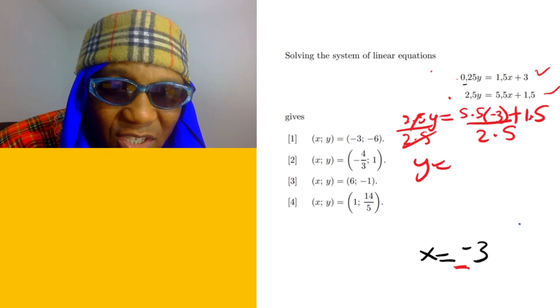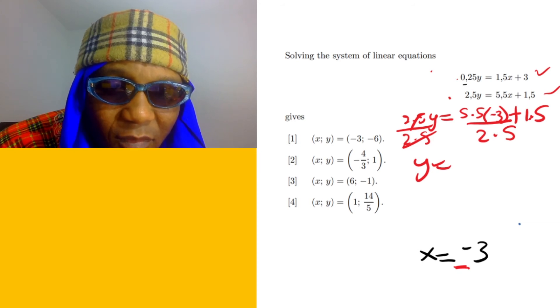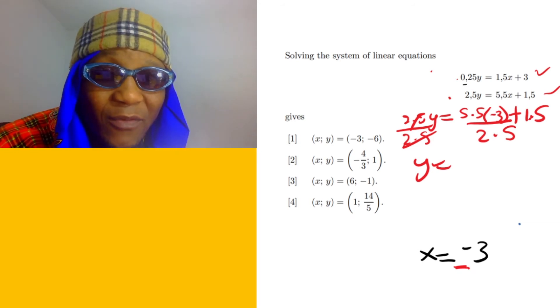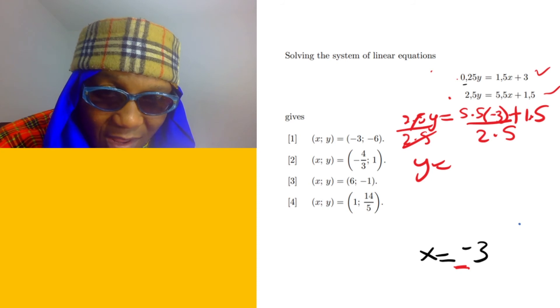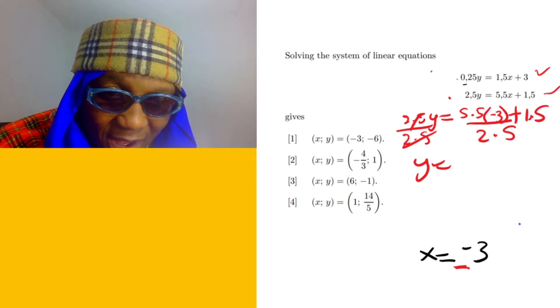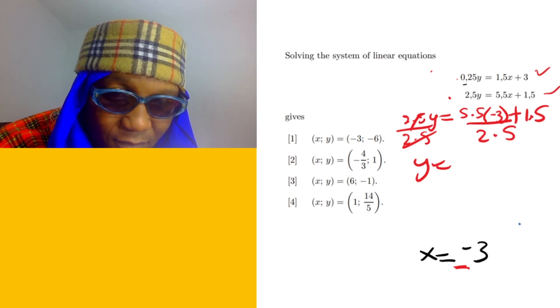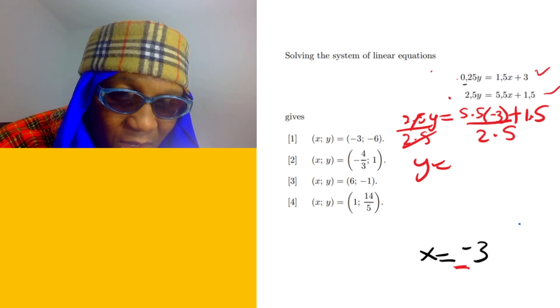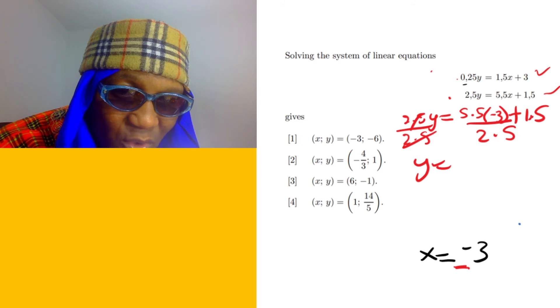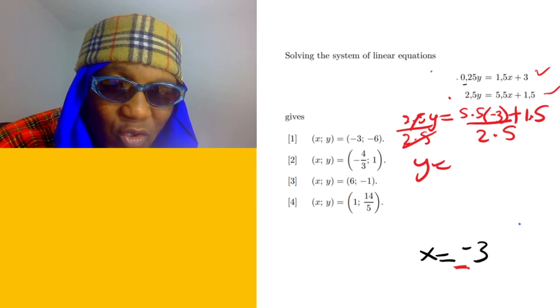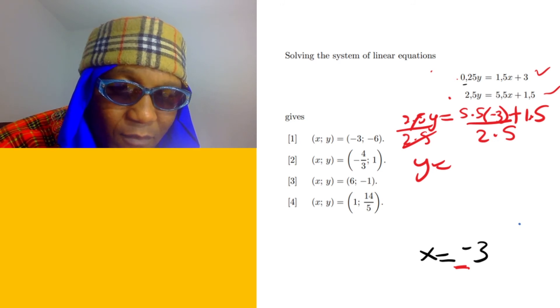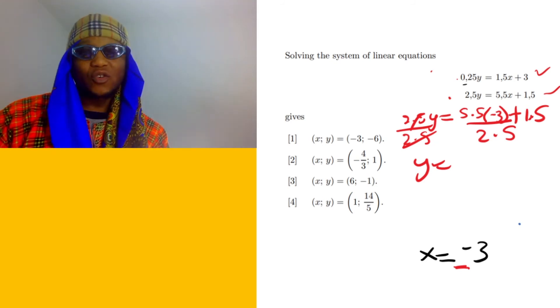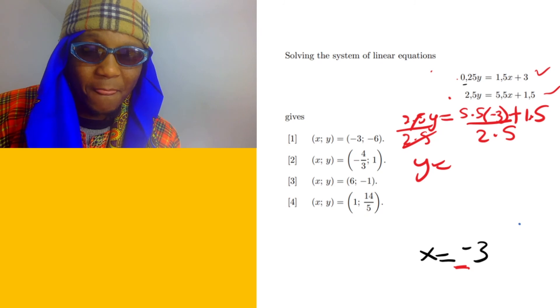We're going to say fraction: 5.5 bracket negative 3, close bracket, plus 1.5, over 2.5. I think it's going to give us negative 6.